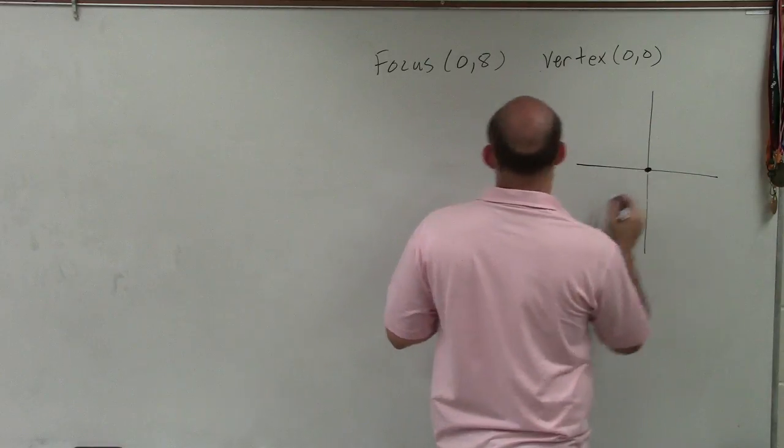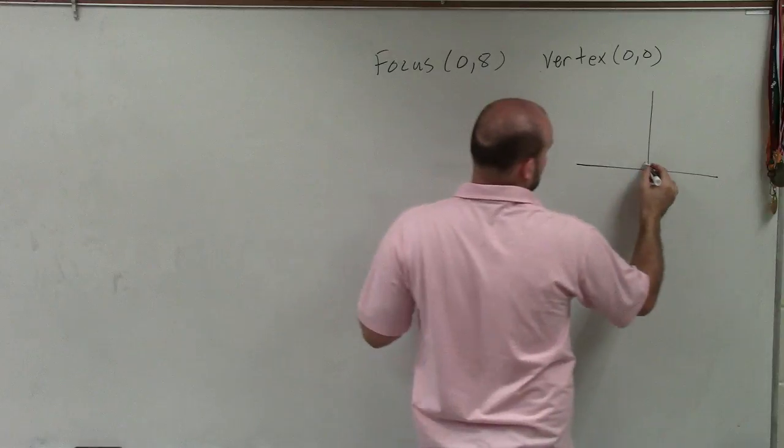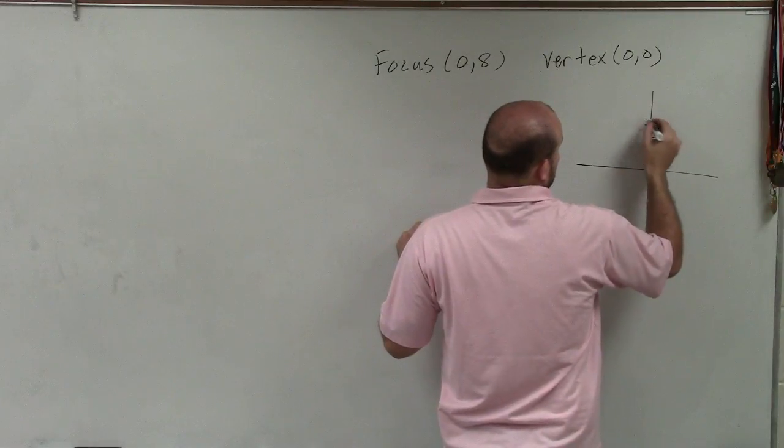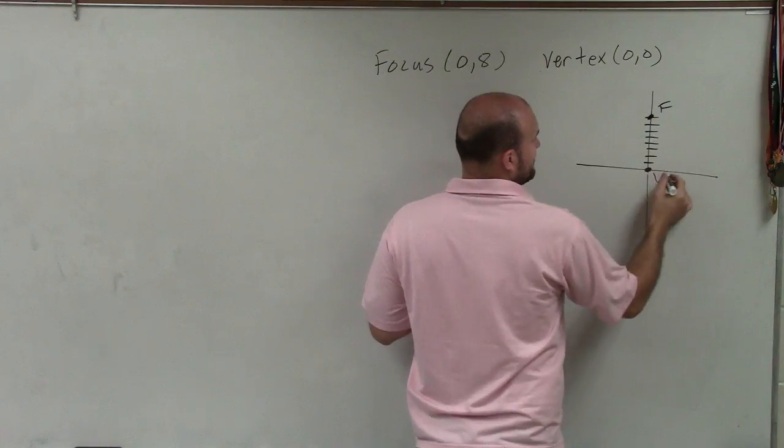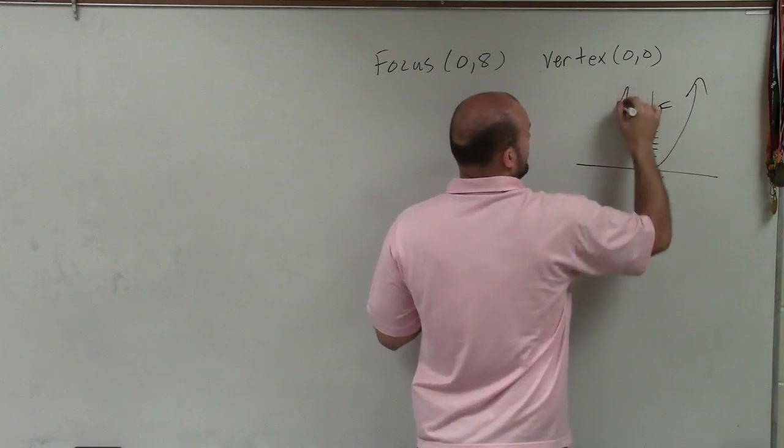So we know the vertex is at 0, 0, and the focus is at 0, 8. One, two, three, four, five, six, seven, eight. So therefore, we can see that. Remember, if that's the focus, that's the vertex, my graph has to open up, right?